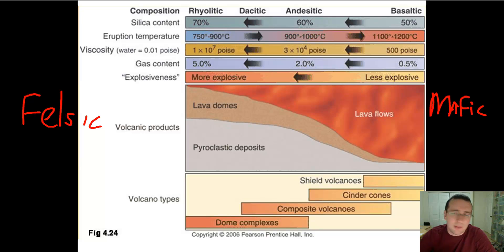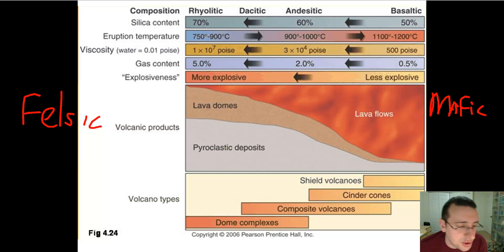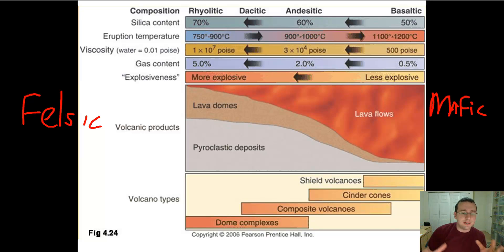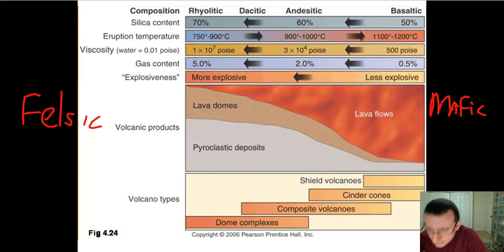Felsic eruptions will have pyroclastic materials, lava domes, and big explosions, with just a little bit of actual lava. On the mafic side, you're going to have runny actual lava that's not very cold. All of this also affects the kinds of volcanic structures that form. Lava flows will tend to form shield volcanoes, and a little colder than that, you get cinder cones. Halfway in between, you get composite volcanoes, which sometimes act mafic, sometimes felsic, sometimes in between. Then on the most felsic end, you're going to get dome complexes — those are the ones that typically tend to be the most explosive when they finally go.